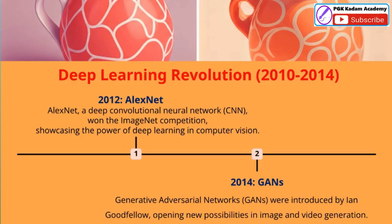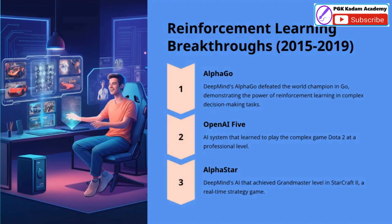From 2015 to 2019, there were major breakthroughs in reinforcement learning. AI systems like AlphaGo, OpenAI Five, and AlphaStar were able to master complex games and decision-making tasks through reinforcement learning. These achievements demonstrate the power of this AI technique in tackling challenging problems and outperforming human experts.